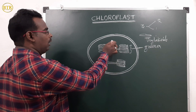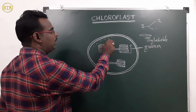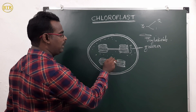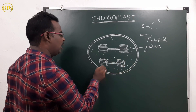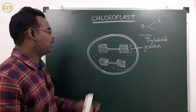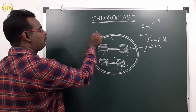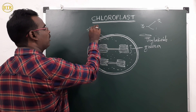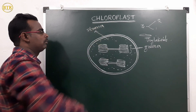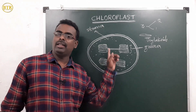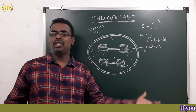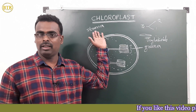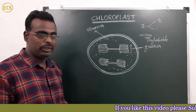A fluid is filled inside the chloroplast, in the inner portion. This fluid-filled portion of the chloroplast is called stroma. Inside the stroma, many enzymes are present and many enzymatic reactions take place.